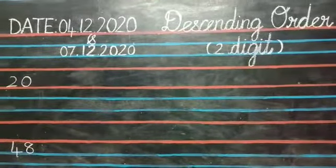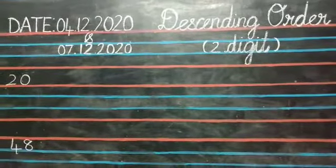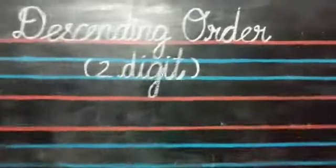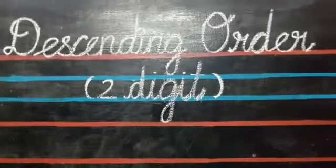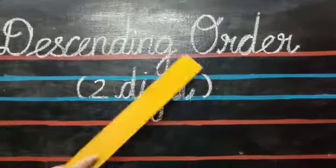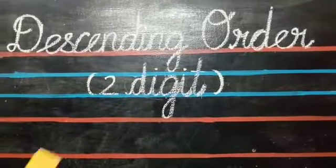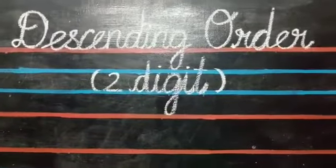Good morning children. This is your number work period. Children, today I am going to revise descending order. How to write descending order for two digit numbers.